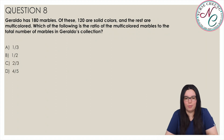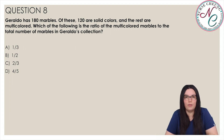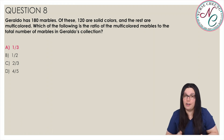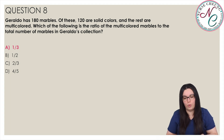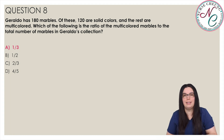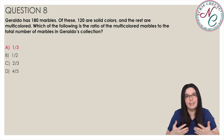Question 8. Geraldo has 180 marbles, of these 120 are solid colors and the rest are multicolored. Which of the following is the ratio of the multicolored marbles to the total number of marbles? Is it A, one over three; B, one over two; C, two over three; or D, five over four? The correct answer is A, one over three. We subtract 120 from 180 to get 60 multicolored marbles. The ratio 60 over 180 reduces to one over three.